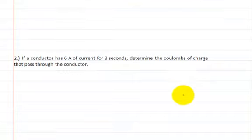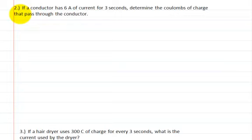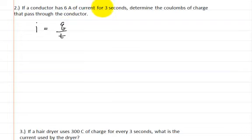Let's go on to the second problem. If a conductor has 10 amps of current for 3 seconds, determine the coulombs of charge that pass through the conductor. Again, we're going to use this formula, where the current is equal to the change in charge divided by the change in time.